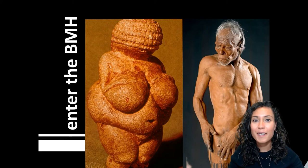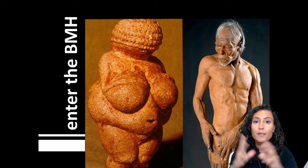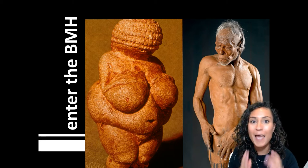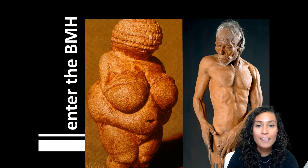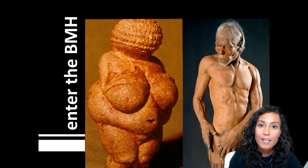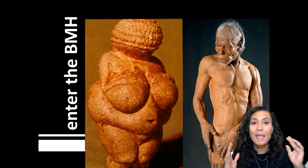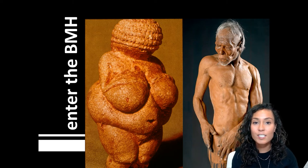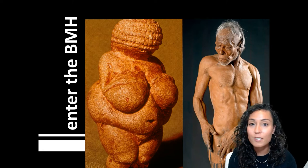Welcome to lecture 2.2, Human Culture's Big Bang. Today we are going to talk about our ancestors' transition from being anatomically modern, as we've talked about in the past couple of lectures, to being behaviorally modern. This transition is associated with the development of symbolic systems like language and art, which we'll get into today as well as in lecture 2.3.